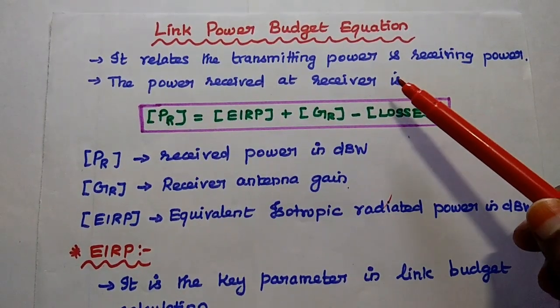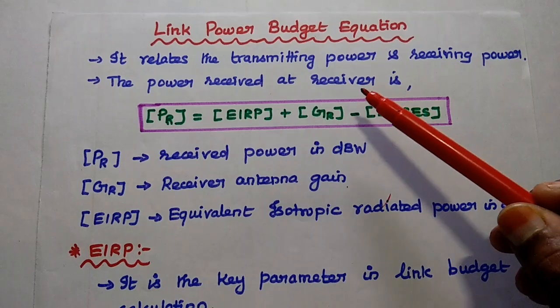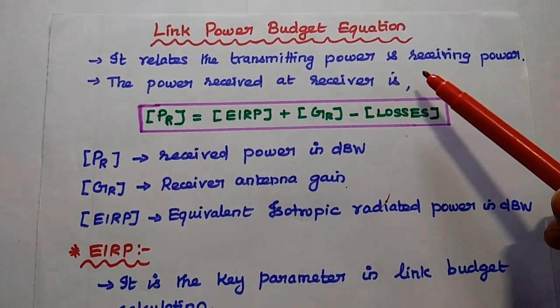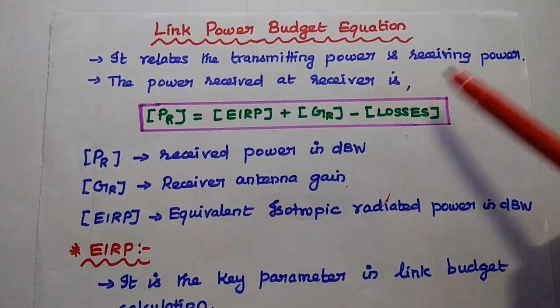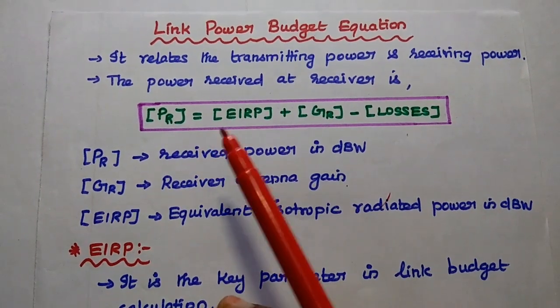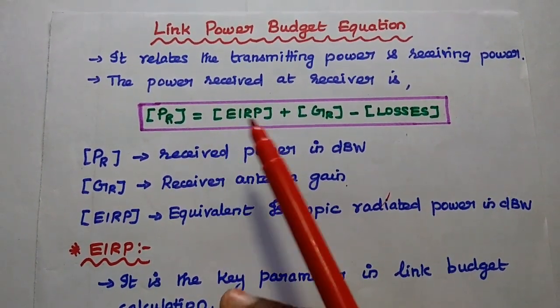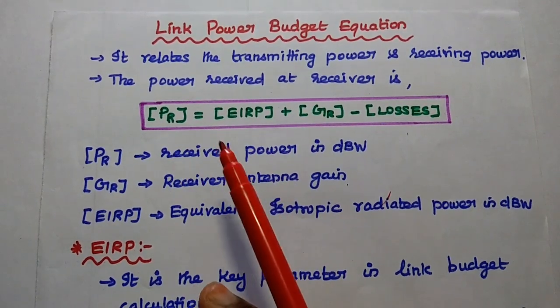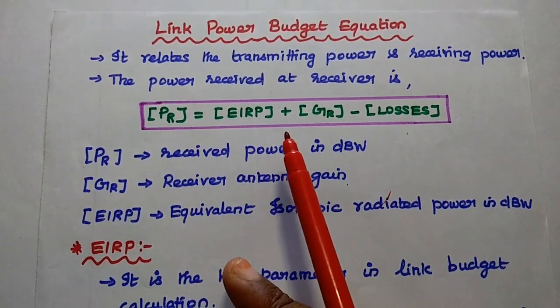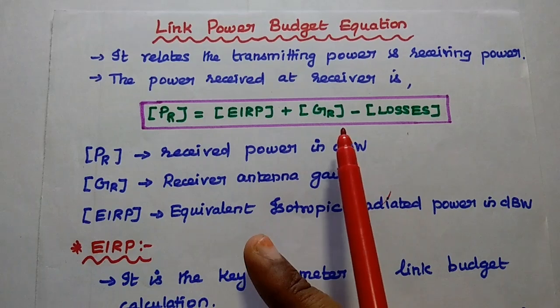This link power budget equation relates the transmitting power, the receiving power and the losses associated with the satellite link. Here the output power of the link, the power received at the receiver, is given as PR = EIRP + GR - Losses.